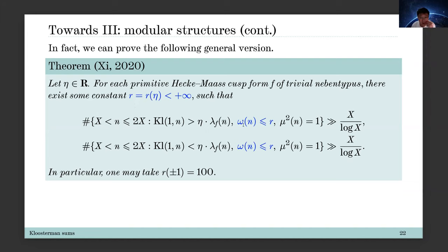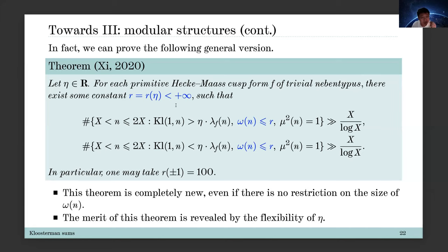In particular when eta is positive one or minus one the constant will be 100, and we can find a uniform constant r to bound the number of prime factors of n. The merit of the theorem is that you can choose a general constant eta, and even without restriction on the size of omega(n), we can characterize the balance between the Kloosterman sums and Fourier coefficients at almost prime moduli.